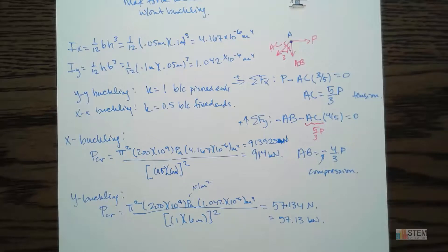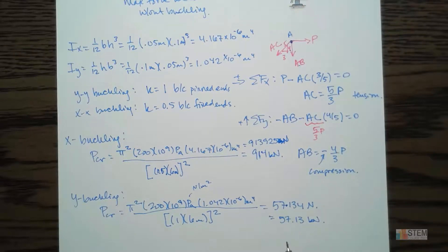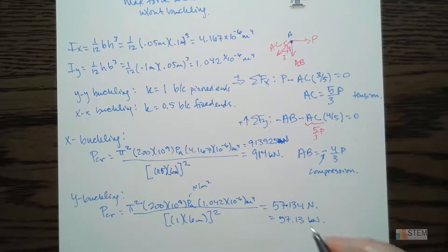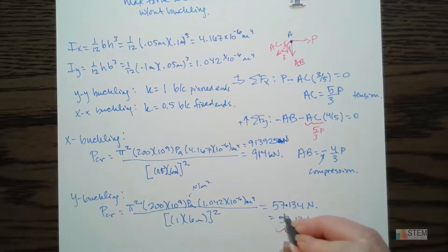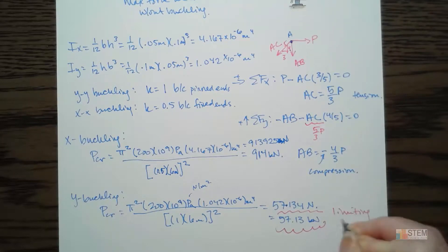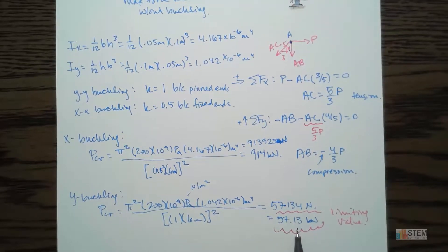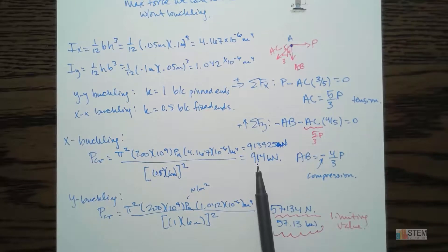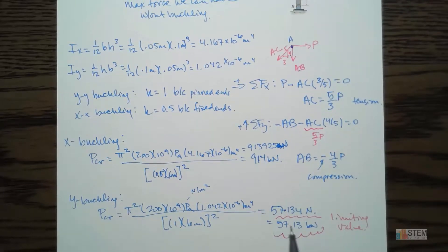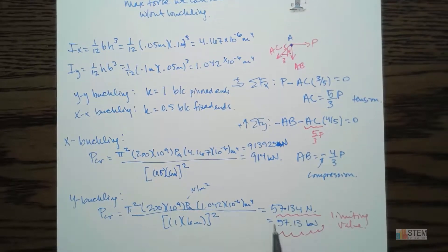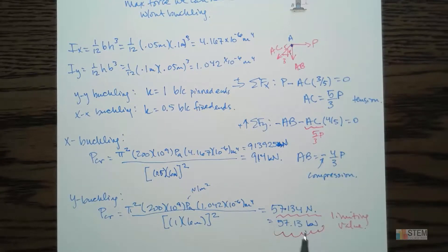We want the maximum load P without buckling about the x-axis or the y-axis. We have to choose one of these PCR values. The limiting value is 57.13 kilonewtons — once we exceed that force, we get buckling about the y-axis. We could never reach 914 kilonewtons for the x-axis because we would have already buckled about the y-axis first.